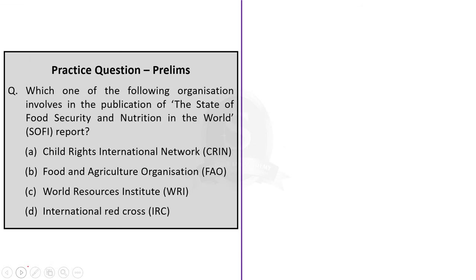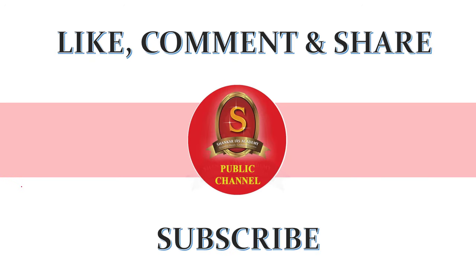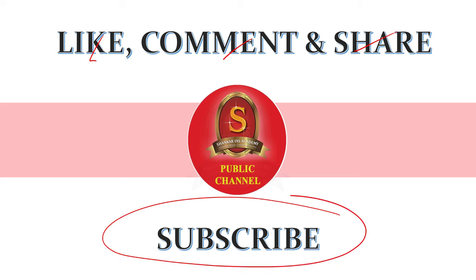Question 4: Which one of the following organizations is involved in the publication of the State of Food Security and Nutrition in the World, SOFI report? Out of the four options, the correct option is the Food and Agricultural Organization — FAO releases this report — so the correct option is B. If you like today's video, like, comment and share it with your friends. For more updates regarding UPSC preparation, subscribe to Shankar IAS Academy. Thank you.